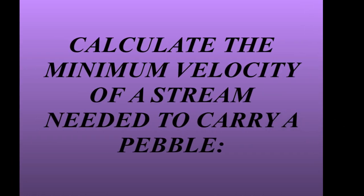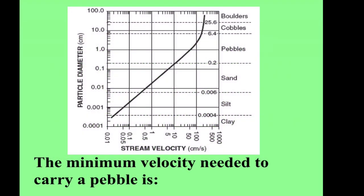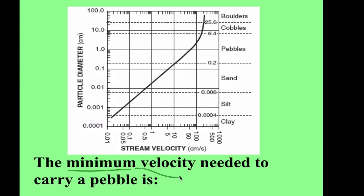We can use this chart to calculate the minimum velocity of a stream needed to carry any sediment — in this case we'll look at a pebble. To find the minimum velocity needed to carry a pebble, we go to the smallest pebble size, go across to the line where it hits, then move downward — and you can see that lands nicely on 10 centimeters per second. That would be the minimum velocity needed to carry a pebble.